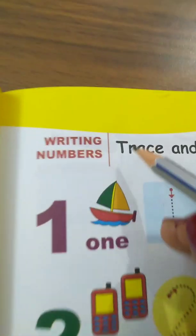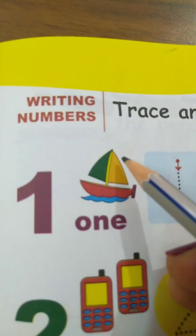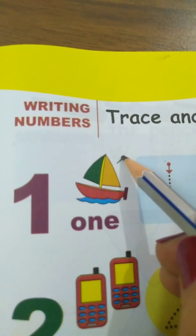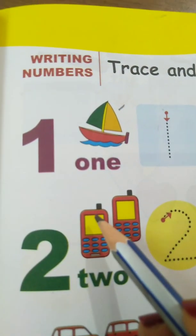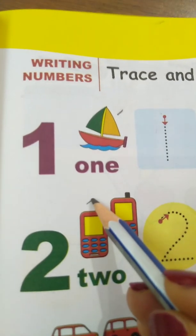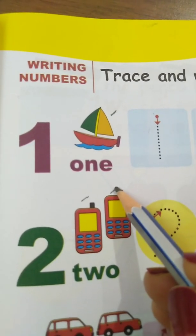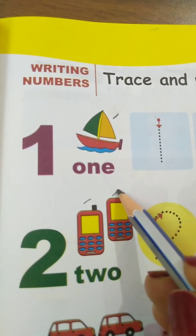Now let's count. How many boats are there? There is only 1 boat. How many phones are there? 1, 2. 2 mobile phones.